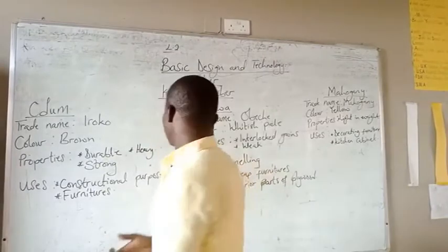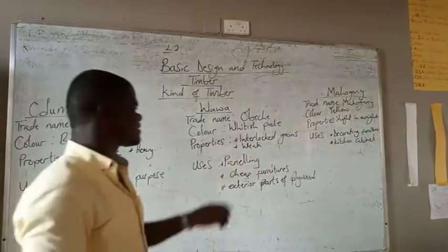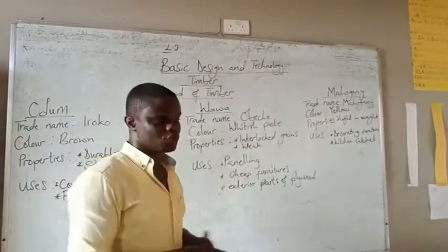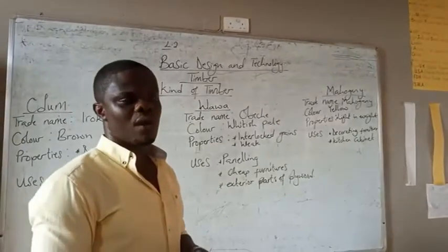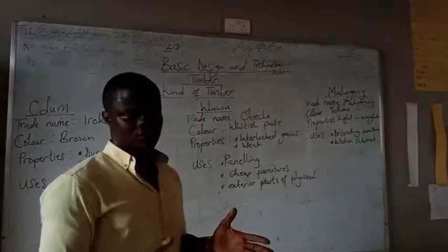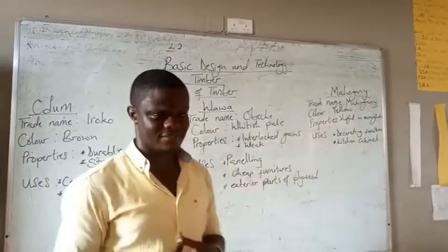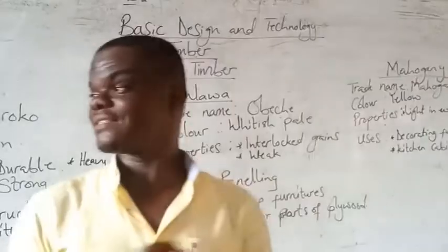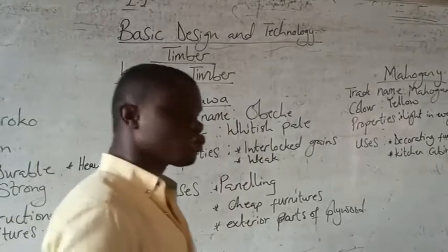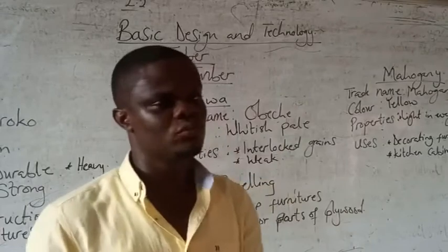Now we move on to guawa. The trade name for guawa is ubeche — not ubeche bilamati, but ubeche. It is whitish in color. Now, guawa has interlocked grains, meaning the grains cross each other. Guawa is also weak — it is not as strong as udum.